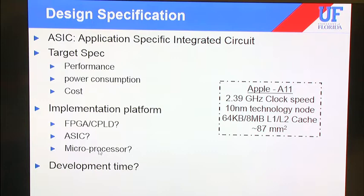For example, the iPhone X uses the Apple A11 Bionic chip. The clock frequency, memory bandwidth, cache memory, and its size — everything is mentioned in the design specification. This is what you need to know first when you start working on a design.